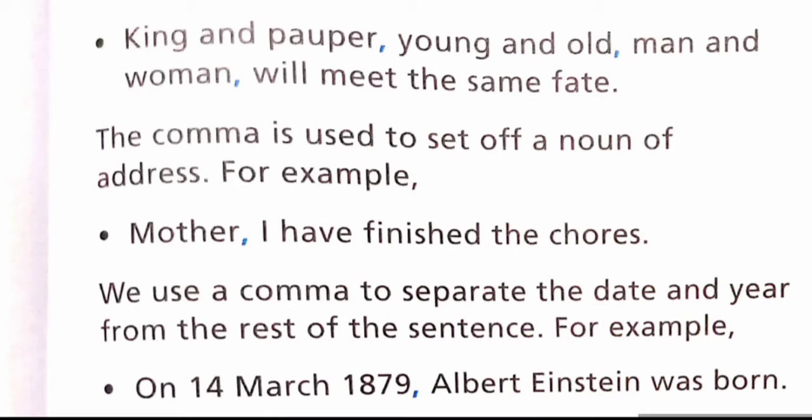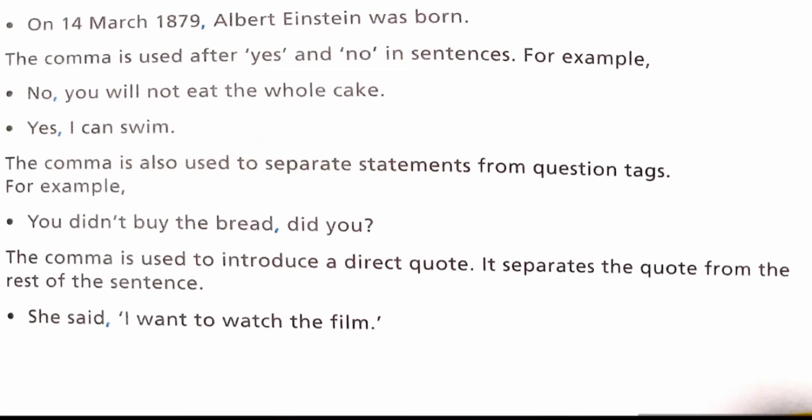We use a comma to separate the date and year from the rest of the sentence. For example: 'On 14th March 1879, Albert Einstein was born.' The comma is also used after 'yes' and 'no' in a sentence. For example: 'No, you will not eat the whole cake.' 'Yes, I can swim.'